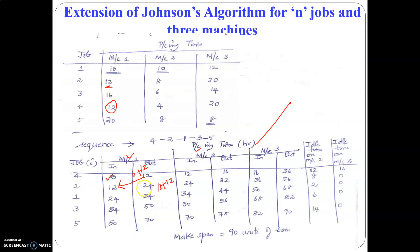At the end of the 24th minute, job 1 enters machine 1 and job 1 requires 10 minutes to be processed, so 24 plus 10 is 34. Similarly, we determine the finish time for all the jobs. At the end of the 70th minute, machine 1 becomes free.